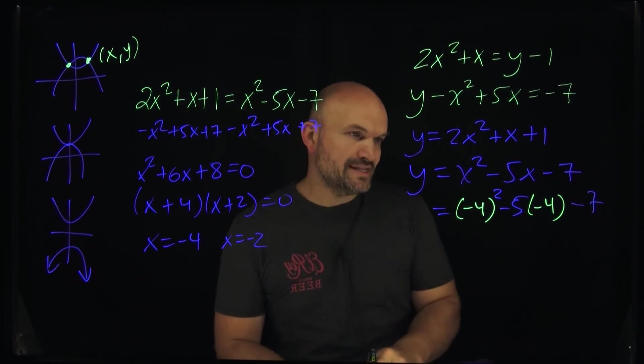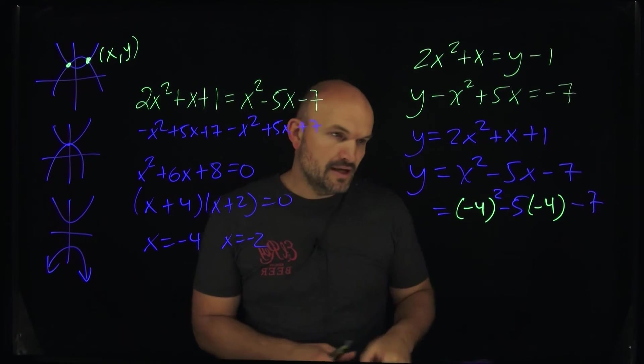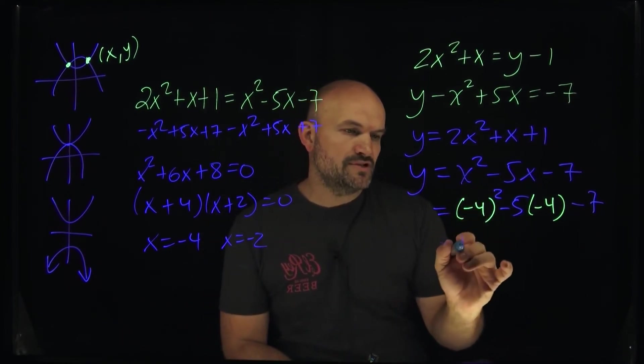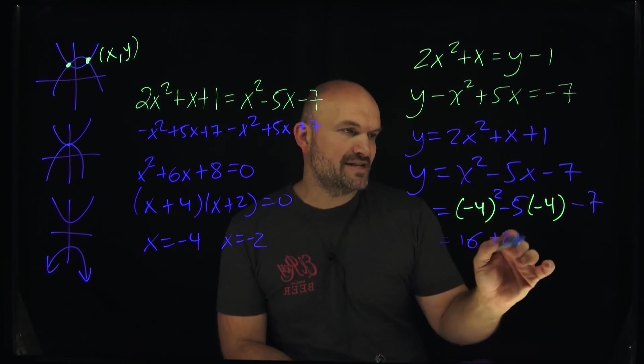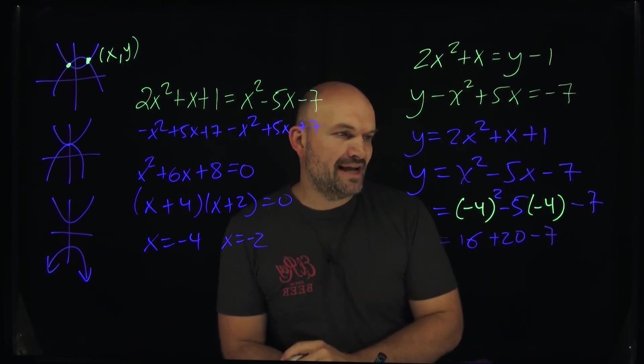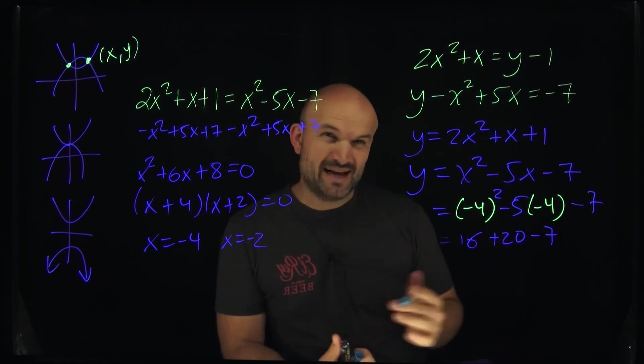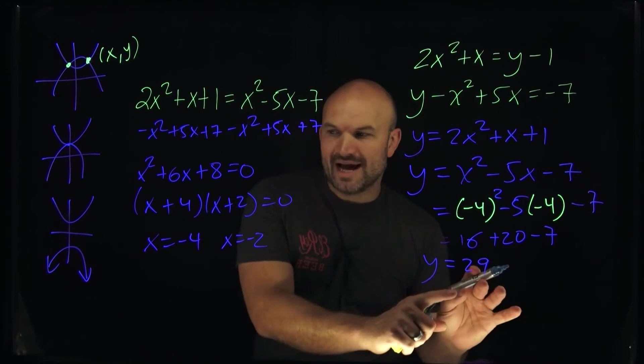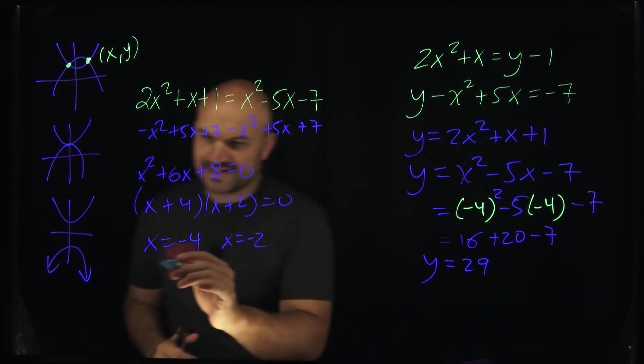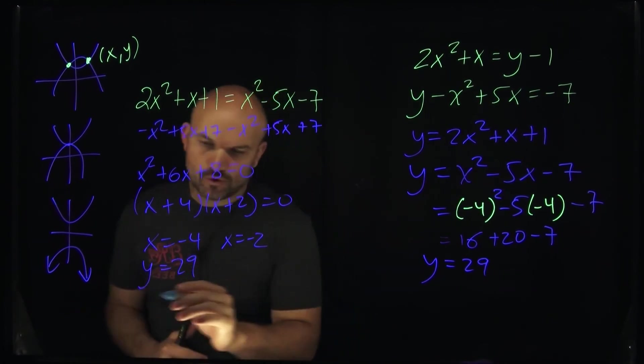So in this example, just make sure when you're doing this that you plug in the negative 4 or whatever your value for X in for both those terms. So in this case, I'm going to have negative 4 squared, which is going to be a 16. Negative 4 times a negative 5 is going to be a positive 20. And then we'll go ahead and have a minus a 7. So therefore, that would be a 13. So this would equal to a 29. So now that is going to be what my value of Y is. So when X equals negative 4, I can say Y is equal to a 29. And now I can go ahead and rewrite them as a coordinate point.